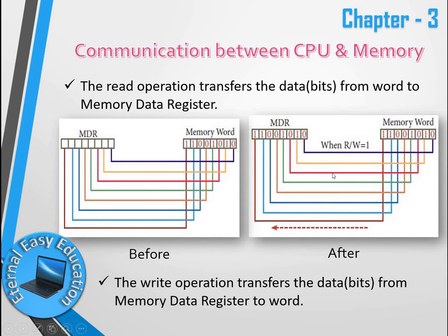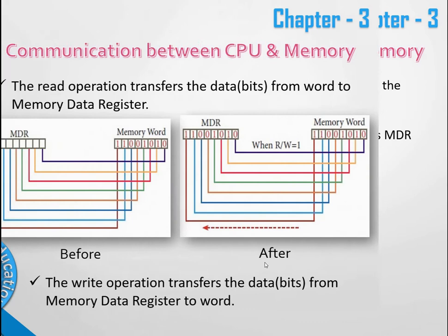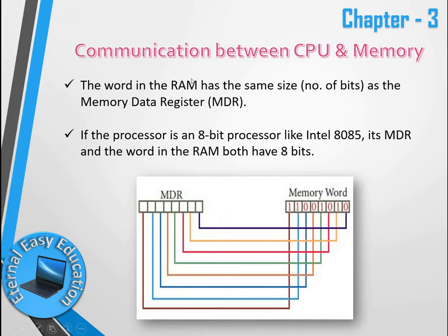The word in RAM must have the same number of bits as the MDR. For example, if the processor is an 8-bit processor like the Intel 8085, both the MDR and the word in RAM must be 8 bits.